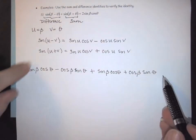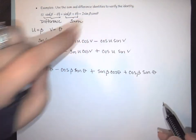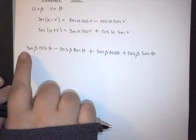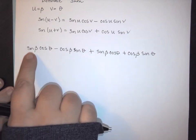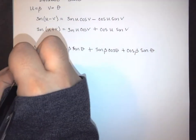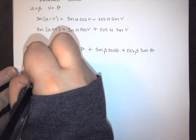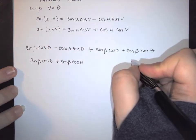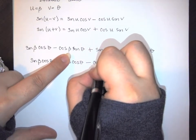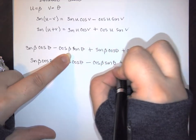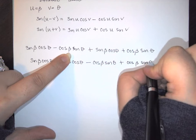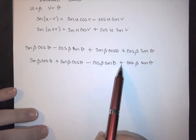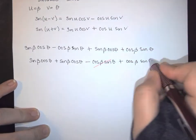I want to rearrange and group like terms. Grouping the two sine terms together: sine(beta)cos(theta) plus sine(beta)cos(theta). Then grouping the cosine terms: minus cos(beta)sin(theta) plus cos(beta)sin(theta). Notice that minus cos(beta)sin(theta) plus cos(beta)sin(theta) — these two terms cancel each other out.